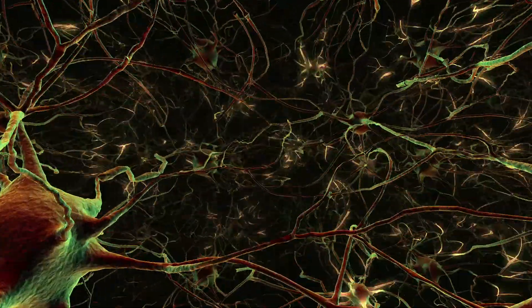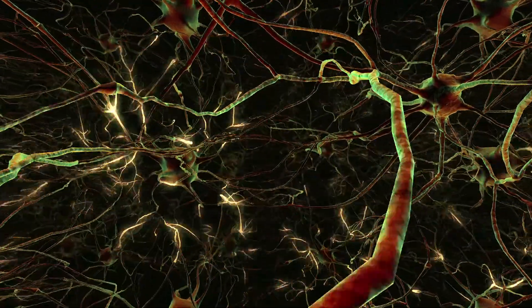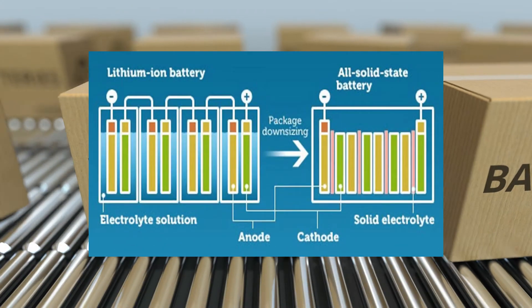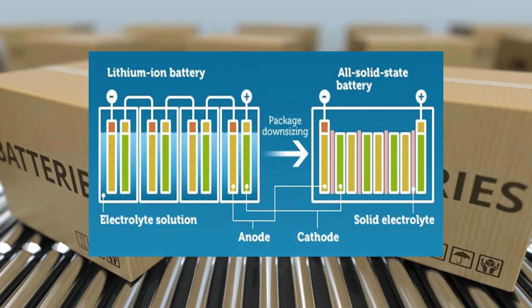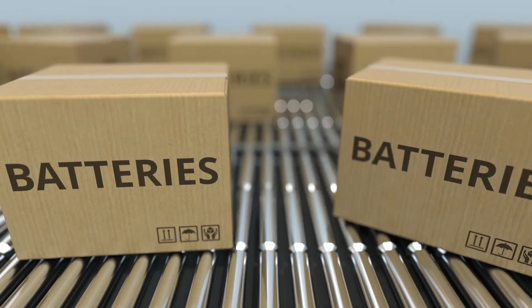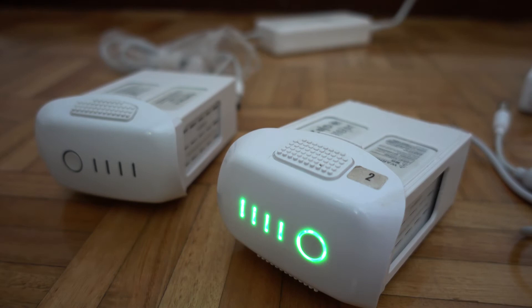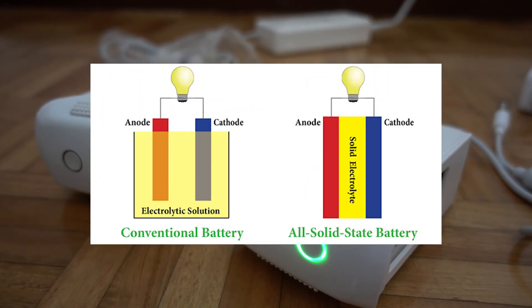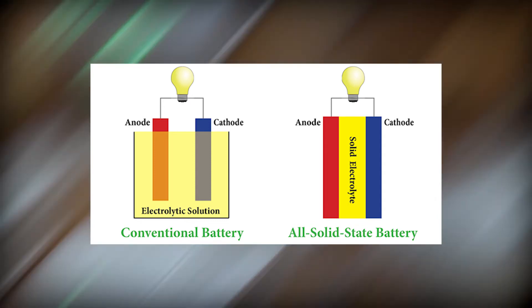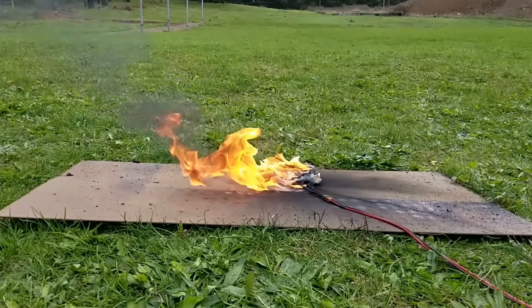The best way to understand why solid-state batteries are so exciting is to look at the problems caused by liquid electrolyte in lithium-ion batteries on the market today. Much of the bulk found in lithium-ion batteries is due to the separator systems and safety precautions required to deal with the catastrophic failure modes of lithium batteries, like exploding cell phones or exploding electric vehicles.